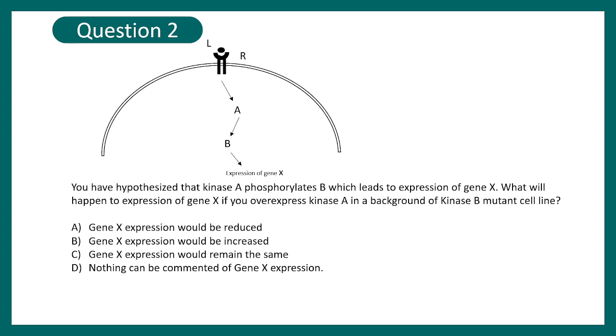The correct answer would be gene X expression would be reduced because gene X expression requires this kinase B. And kinase B is possibly activated by A. Now in a mutant kinase B background, no matter how much kinase A you put, nothing would happen because gene expression of X requires kinase B. So in order to rescue this kind of deficiency we need to put kinase B not kinase A.